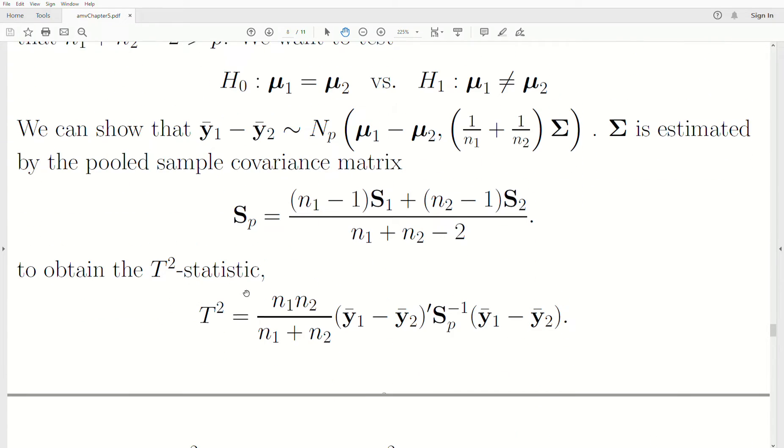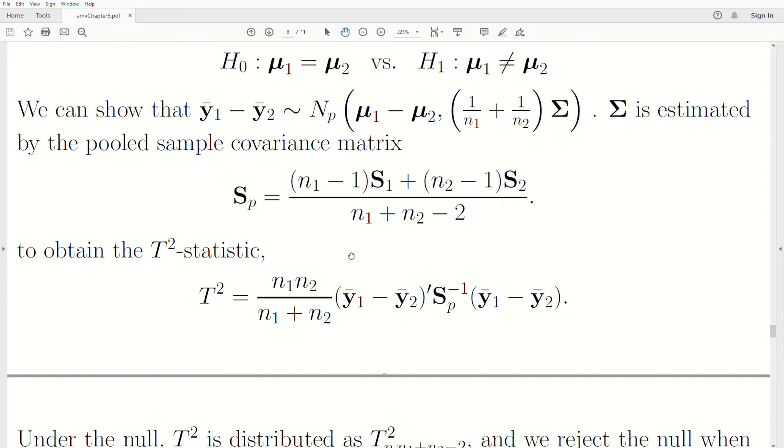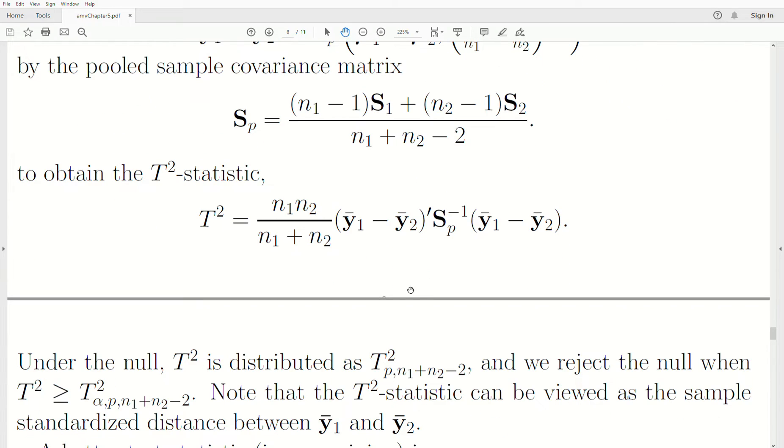To obtain the t-squared statistic, we calculate this quadratic form. It's a Mahalanobis distance. The constant n1 times n2 divided by n1 plus n2 should really be incorporated in that pooled variance. When we calculate Mahalanobis distance in R, you'll see that you have to bring that back into the sample covariance matrix. This is Mahalanobis distance.